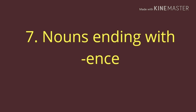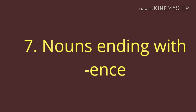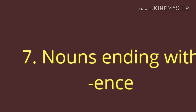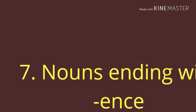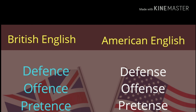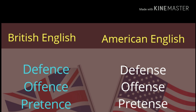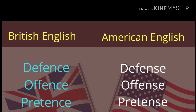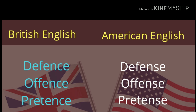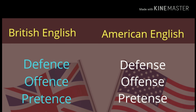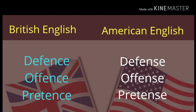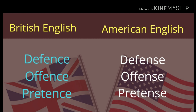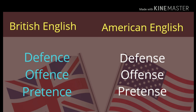Now we'll discuss nouns ending in E-N-C-E versus E-N-S-E. In British English we use E-N-C-E, while in American English we use E-N-S-E. For example: defence, offence, and pretence. 'Defence' is spelled with N-C-E in British English, while it is spelled with N-S-E in American English.